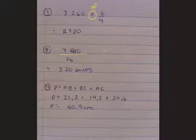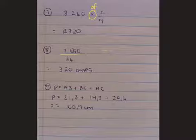Last question for the section. It says in a scalene triangle ABC, AB is equal to 21.3 centimeters, BC is 19.2 centimeters, and AC is 20.4.